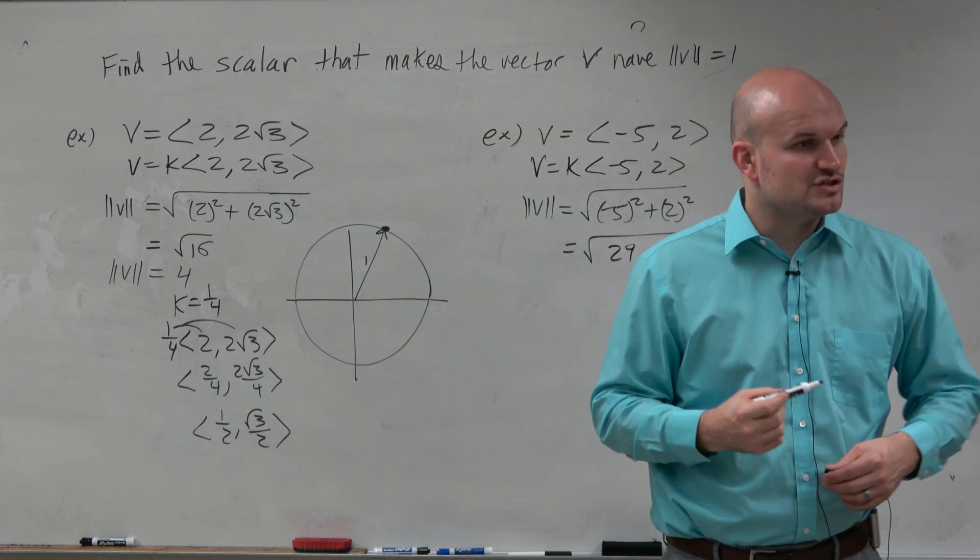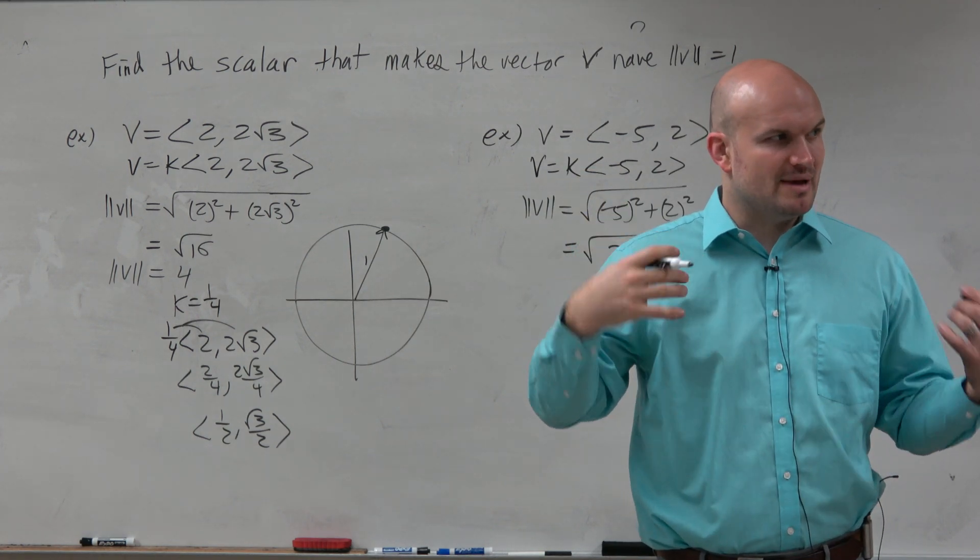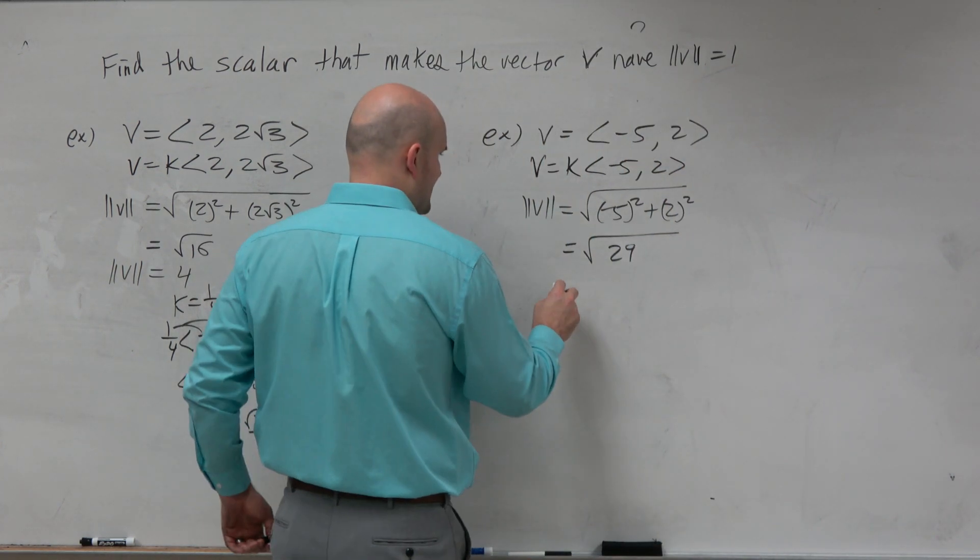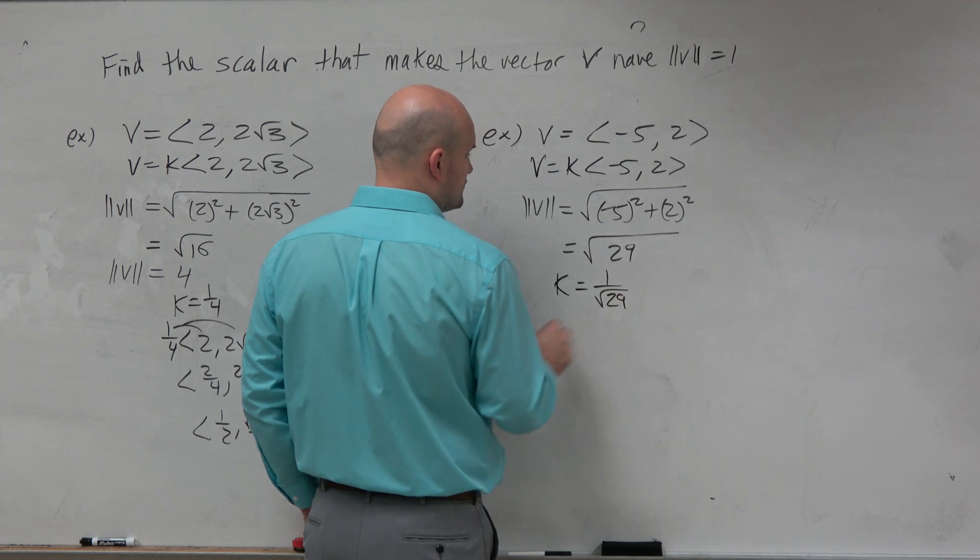So if my magnitude of this vector is 29, but I want to figure out what number should I multiply by, so the magnitude would be 1. 1 over √29. That's about as basic as we get. So k equals 1 over the square root of 29.